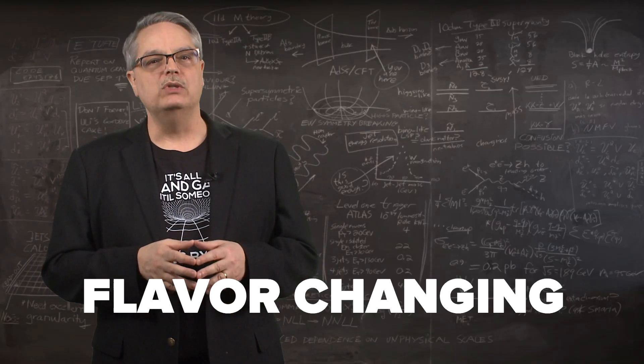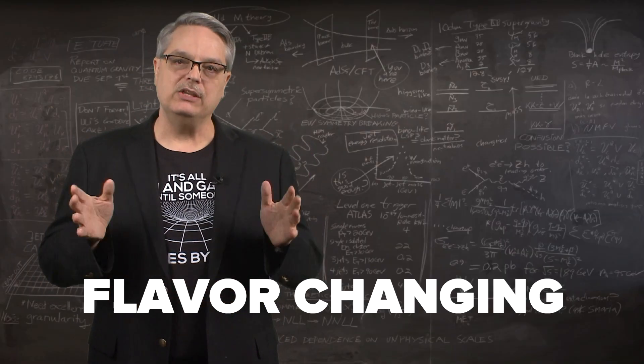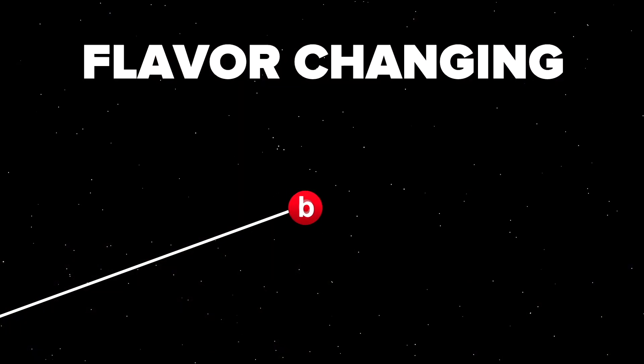While this property is unique to the weak force, it is not unique to the top quark. A bottom quark can emit a W boson and make a charm quark. And a charm quark can emit a W boson and make a strange quark or a down quark.